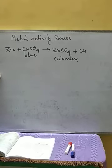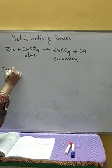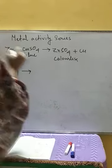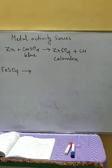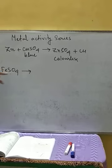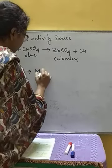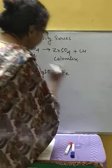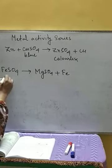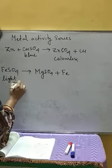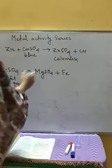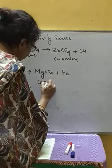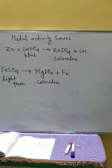Next, the reaction between magnesium and ferrous sulfate. As we know, magnesium is placed at a higher position than iron, meaning magnesium is more reactive than iron. So magnesium will displace iron from its compound, ferrous sulfate, and it will produce MgSO4 — magnesium sulfate — and iron will be left out. So the light green color of the solution will change to the colorless solution of magnesium sulfate.